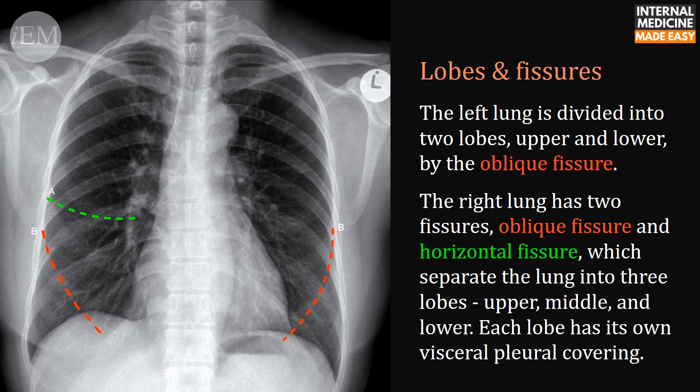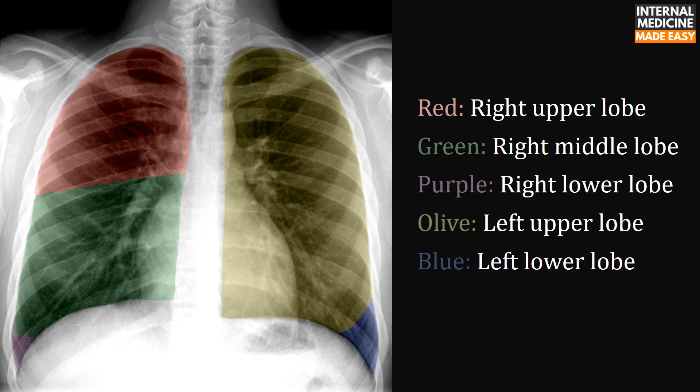Regarding lobes and fissures: the left lung is divided into two lobes — upper and lower — by the oblique fissure. The right lung has two fissures (oblique and horizontal) which separate it into three lobes: upper, middle, and lower. Each lobe has its own visceral pleural covering. On the diagram, the red area is the right upper lobe, green is the right middle lobe, purple is the right lower lobe, olive is the left upper lobe, and blue is the left lower lobe.